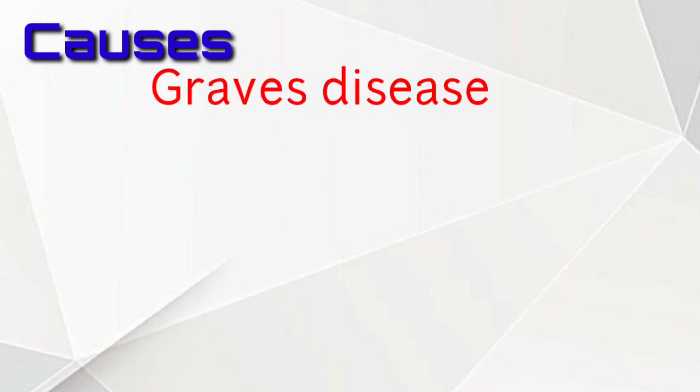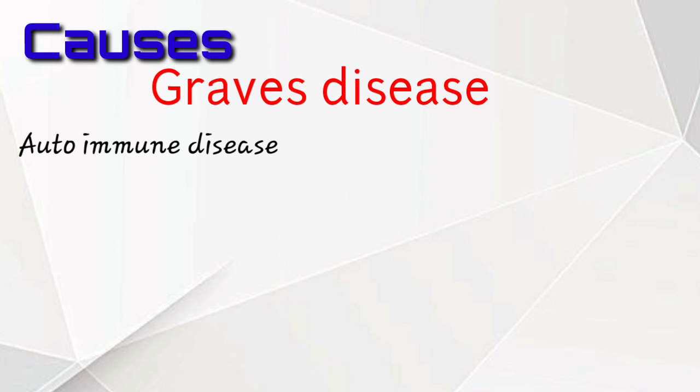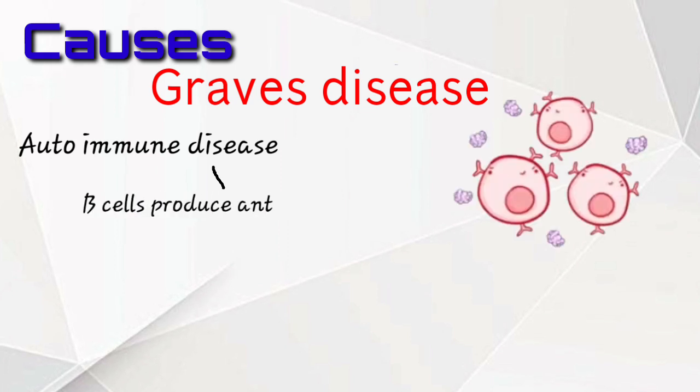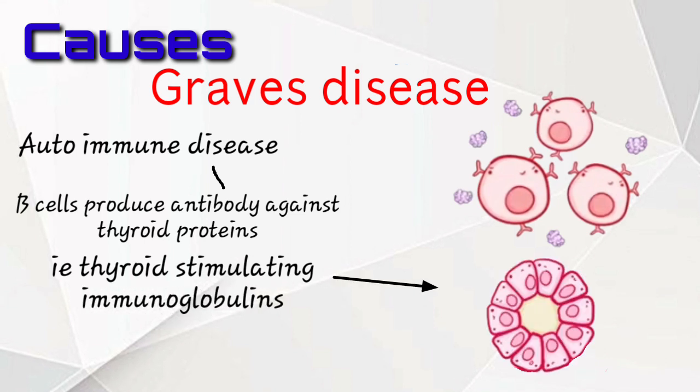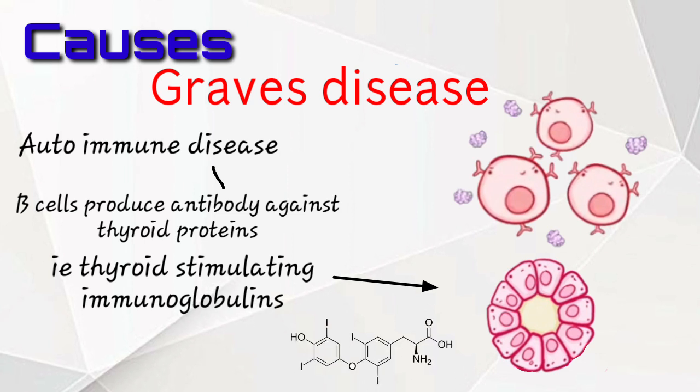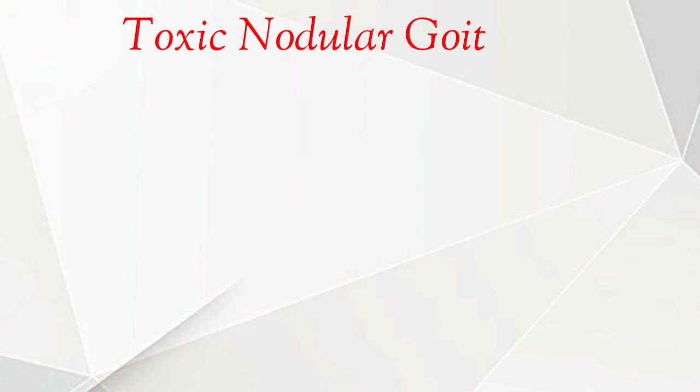Graves disease is an autoimmune disease. B cells produce antibodies against thyroid proteins called thyroid stimulating immunoglobulin. This attaches to follicular cells and increases T3, causing hyperthyroidism.